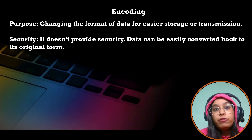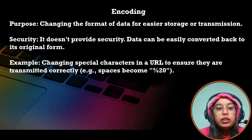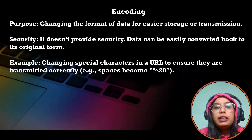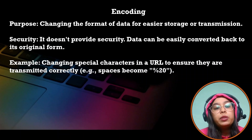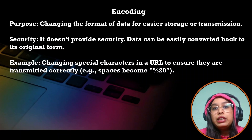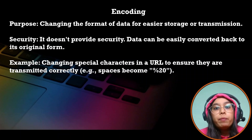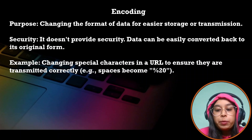That is a huge difference between encoding and encryption. Also, I should mention reversibility — encodings are typically reversible. If you know the encoding method, you can easily get your data back in its original form. Examples of encoding are Base64 and URL encoding.